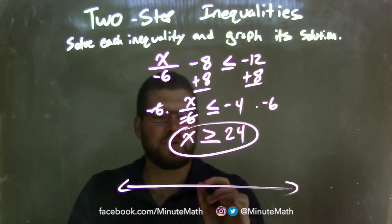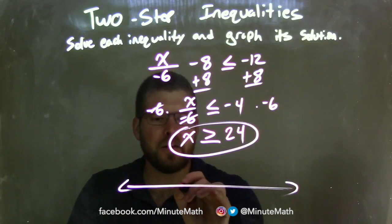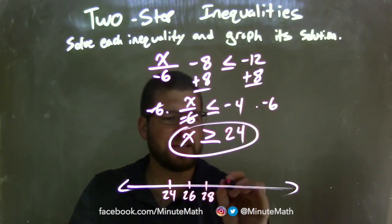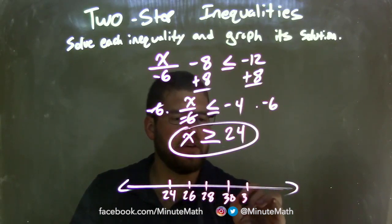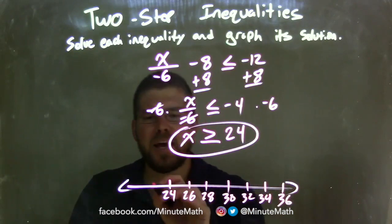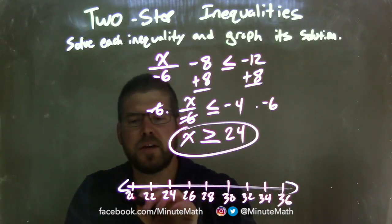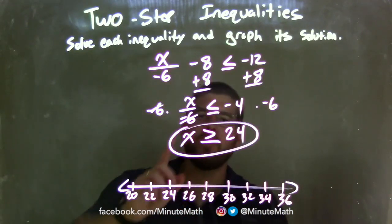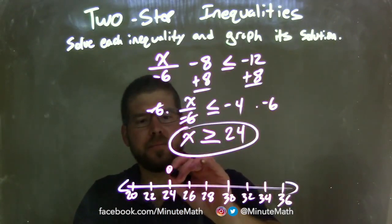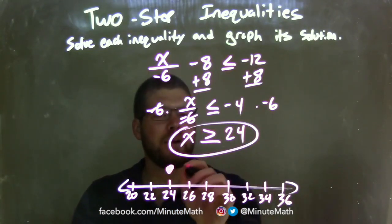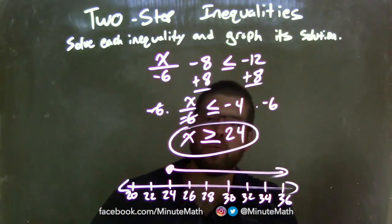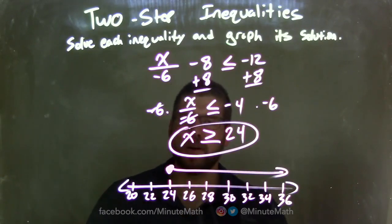That's my final answer, but now I need to graph it. Let's put 24 on the table, going by 2s: 26, 28, 30, 32, 34, 36, and 22, 20 on the left. Since x can be equal to 24, I have a closed circle at 24. x is also greater than, so I shade to the right. Our graph now matches our answer, which is x is greater than or equal to 24.